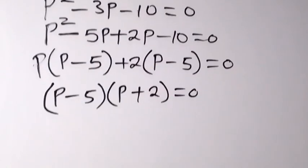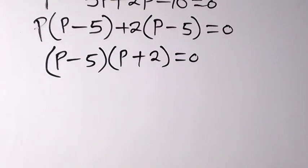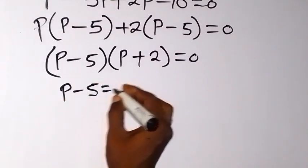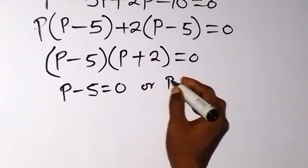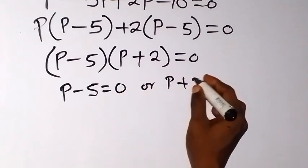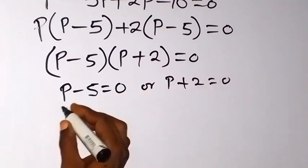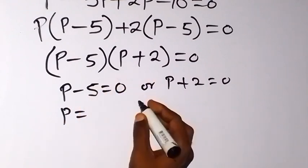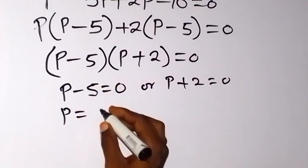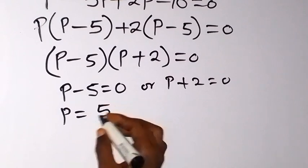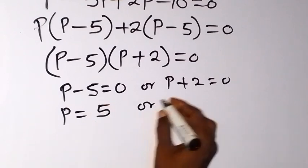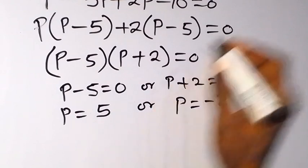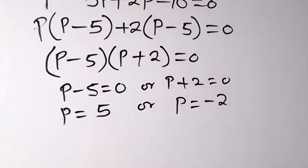Either of these factors could be zero. Therefore, p − 5 = 0 or p + 2 = 0, giving p = 5 or p = −2. These are the two cases we have.